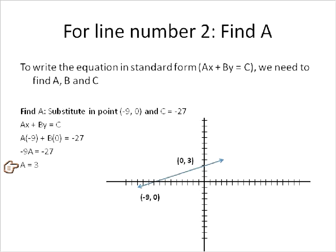So we know our A value is 3, our C value is negative 27. Let's find out what our B value is. To find the value for B, we're going to substitute the x and y values from our second intercept point, 0, 3. So x is equal to 0, y is equal to 3. We substitute that into this equation, and C is equal to negative 27.